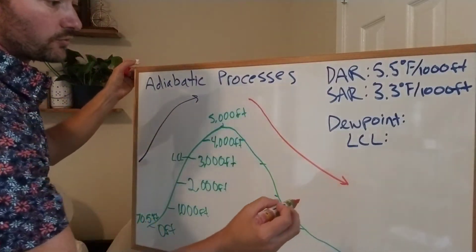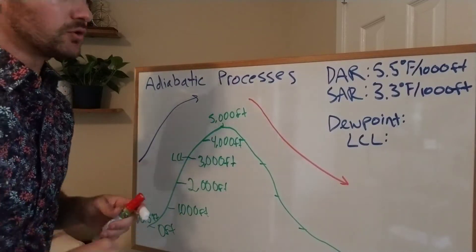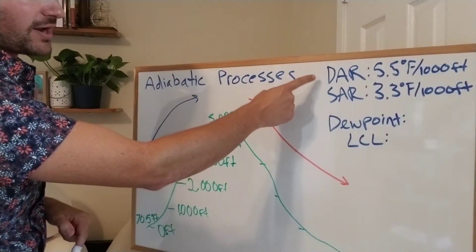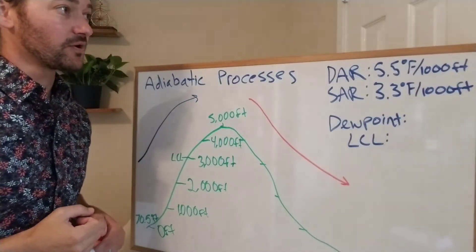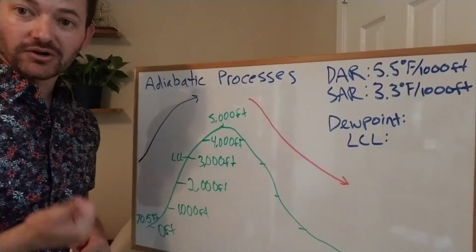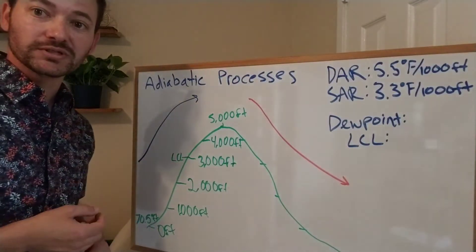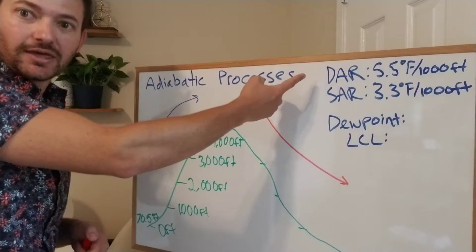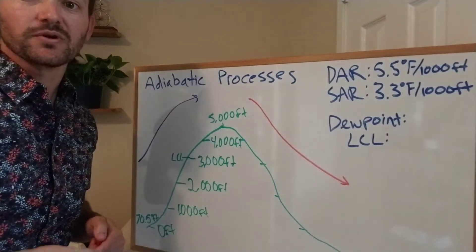Really important numbers for calculating this: the dry adiabatic rate, DAR, is 5.5 degrees Fahrenheit per thousand feet. Anytime air is dry — meaning it's less than 100% relative humidity — it's going to heat and cool by 5.5 degrees per thousand feet.